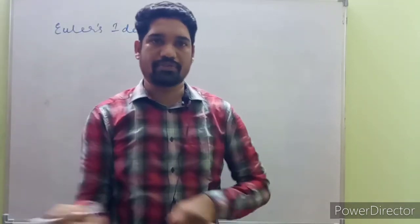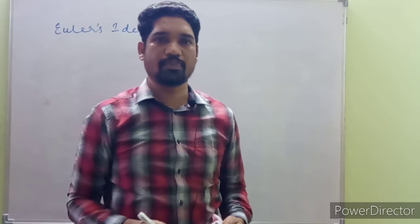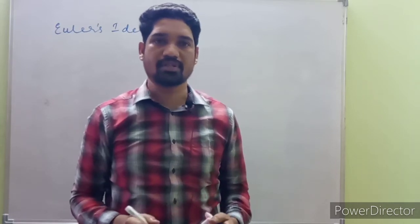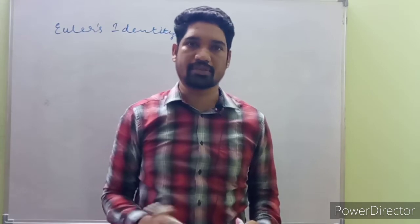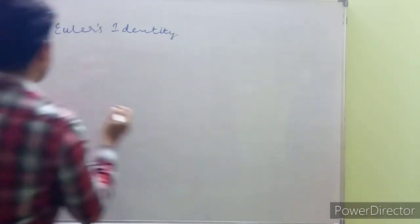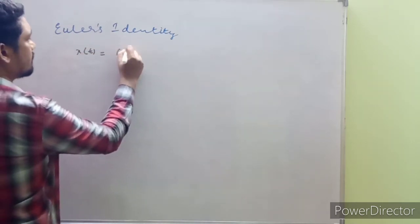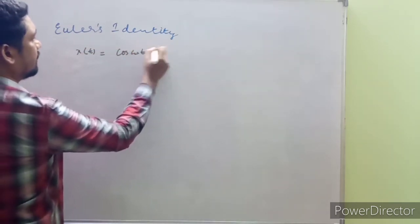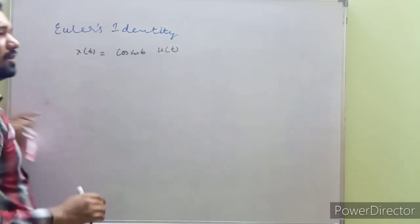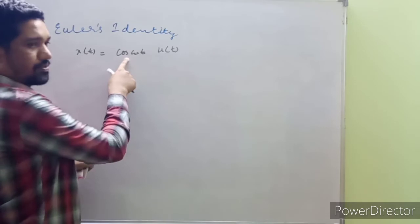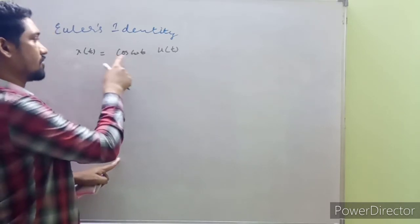Let's see the application of this. We have just obtained relationships expressing cosine and sine in terms of Euler's identity. Let's see what use that conversion is. For example, x(t) may be given as cos(ωt)·u(t), and we are asked to evaluate the Laplace transform of this function. So what is the Laplace transform of this cosine function?